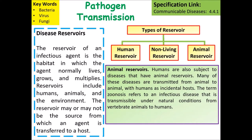Humans are also susceptible to diseases that have animal reservoirs. Many of these diseases are transmitted from animal to animal and then from animal to humans, making humans incidental hosts, because we are not the preferred host for that particular disease.